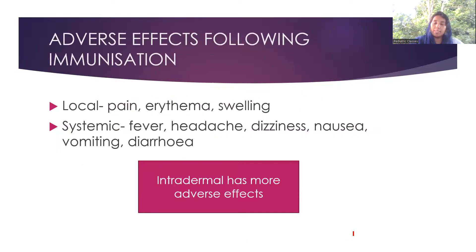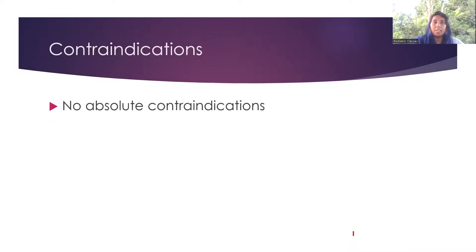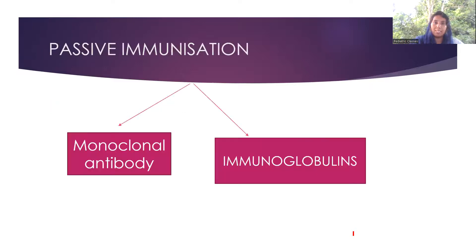Adverse effects following immunization include local effects like pain, erythema, mass, and swelling, and systemic effects like fever, headache, dizziness, nausea, vomiting, and diarrhea. Note that intradermal has more adverse effects compared to intramuscular. There are no absolute contraindications because rabies is a potentially fatal disease — pregnant ladies, lactating mothers, newborns, and anyone can be vaccinated after exposure.